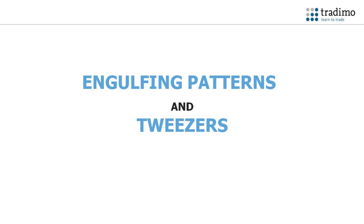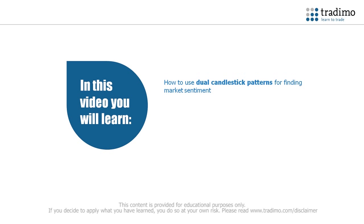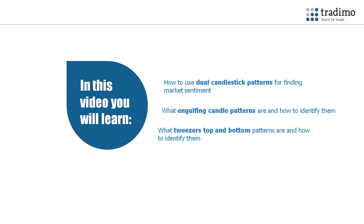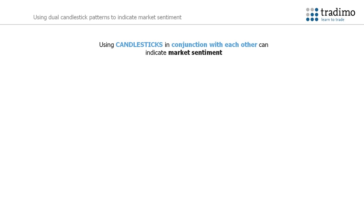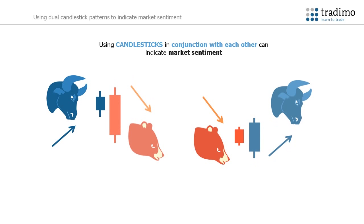Engulfing Patterns and Tweezers. In this video you will learn how to use dual candlestick patterns for finding market sentiment, what an engulfing pattern is and how to identify it, what tweezer top and bottom patterns are and how to identify them. Using candlesticks in conjunction with each other can indicate market sentiment by highlighting a shift in power between the buyers and the sellers. Candlestick patterns can therefore provide signals such as a reversal of price action.